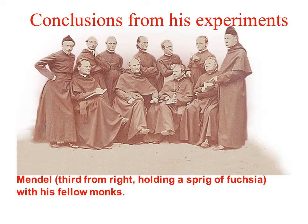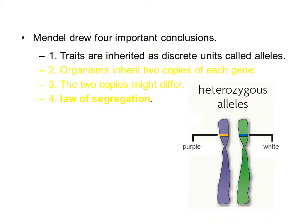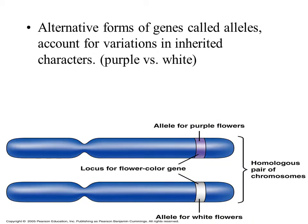Conclusions from Mendel's experiments. Mendel drew four important conclusions. The first conclusion we will discuss is that traits are inherited as discrete units called alleles. Alternative forms of genes are called alleles. They account for variations in inherited characters. The example of the purple versus white pea plant flower is a really good example of different alleles.